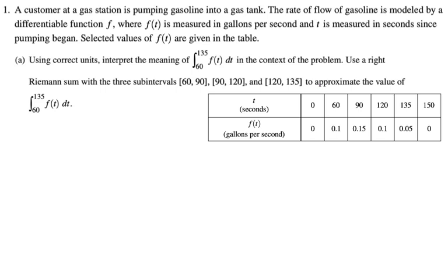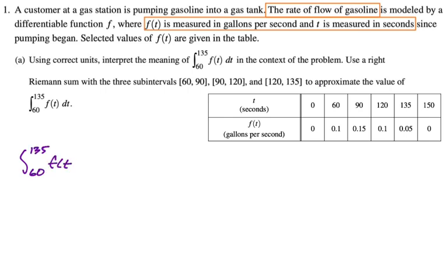Selected values of f(t) are given in the table. For part A, we have to use correct units, interpret the meaning of the integral from 60 to 135 f(t) dt in the context of the problem. Then we're going to use a right Riemann sum with the given subintervals to approximate the value. All right, so first we have to interpret this thing. So I'm going to just write down what we're dealing with. So the rate of flow of gasoline is f(t), which is measured in gallons per second and t is measured in seconds.